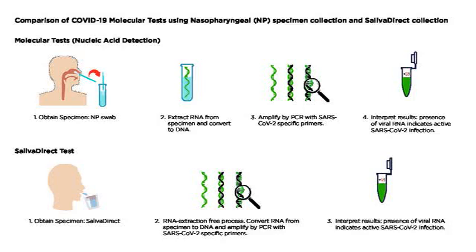In a nucleic acid test, there are several ways of amplification including polymerase chain reaction. Virtually all nucleic acid amplification methods and detection technologies use the specificity of Watson and Crick base pairing. Single-stranded probe or primer molecules capture DNA.